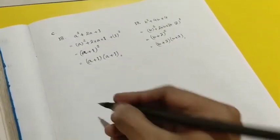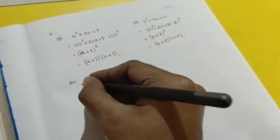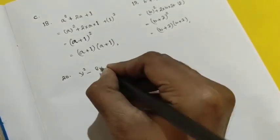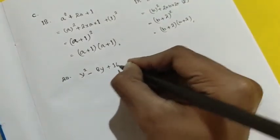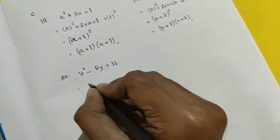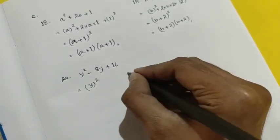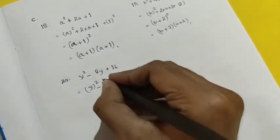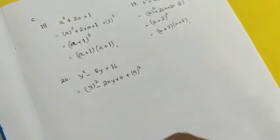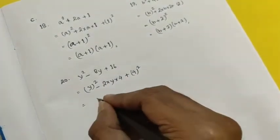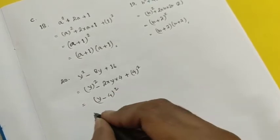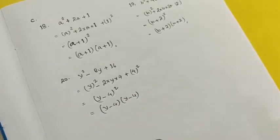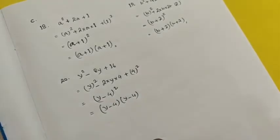Let's see question number 20. Question 20 is y² - 8y + 16. Here y² can be written as y whole square, and 16 can be written as 4 whole square. Since there is a minus sign, we use a² - 2ab + b² = (a-b)². So this becomes (y-4)², and writing in factorized form: (y-4)(y-4). This is how we solve number C problems.